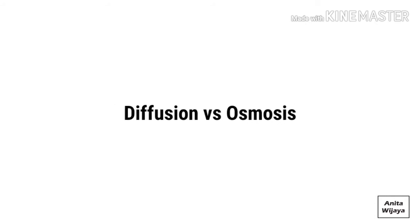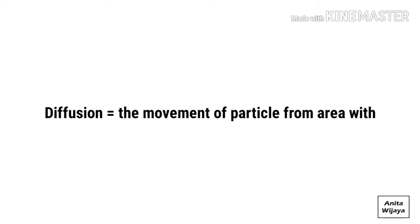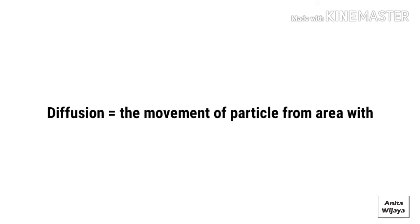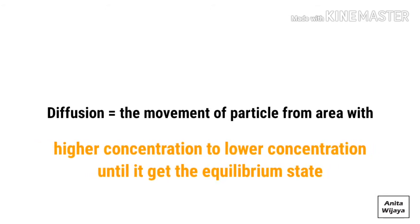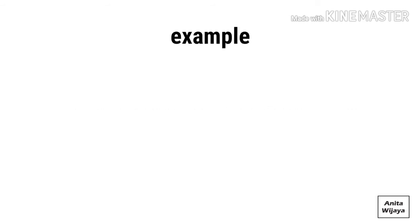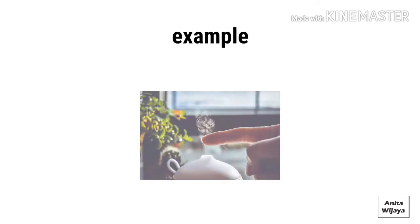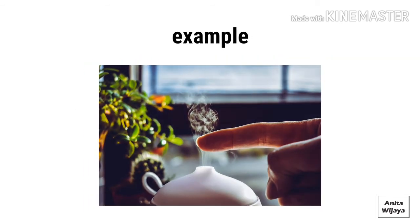First, I would like to tell you about diffusion. Diffusion is the movement of particle from an area with higher concentration to lower concentration until it gets the equilibrium state. The example of diffusion is the spread of perfume in a whole room.